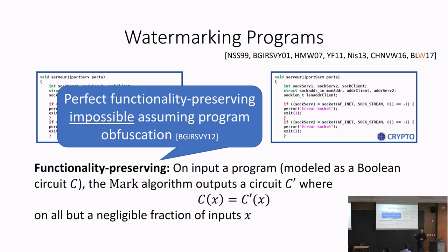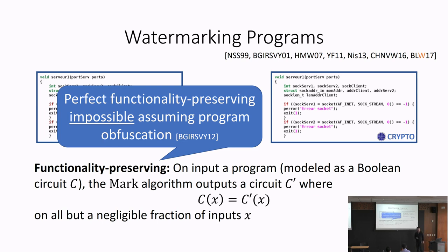Indistinguishability obfuscation is an algorithm that takes in a circuit and produces an obfuscated version. The obfuscated circuit has the same functionality, and the security requirement says that if you obfuscate two circuits computing the same functionality, their obfuscations are computationally indistinguishable to any efficient adversary. If we had perfect functionality-preserving watermarking, you could just obfuscate the two circuits — they'd be indistinguishable — yet the verification algorithm is supposed to distinguish them, which is a contradiction.